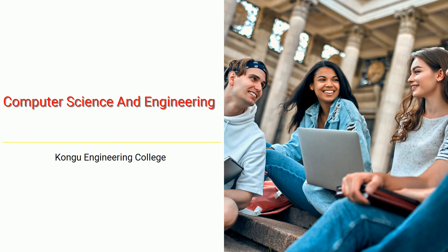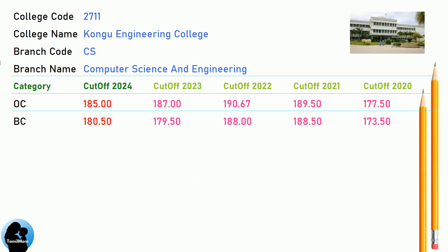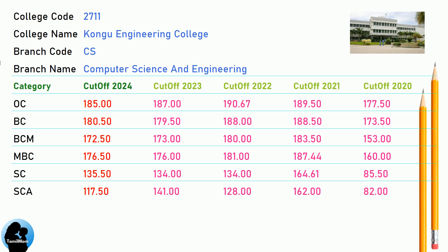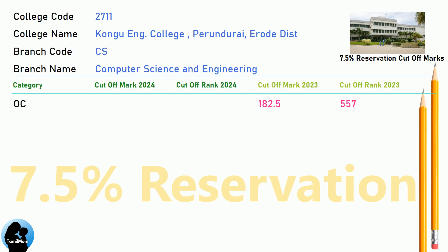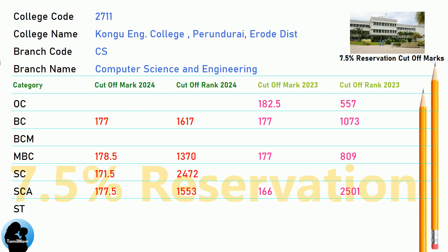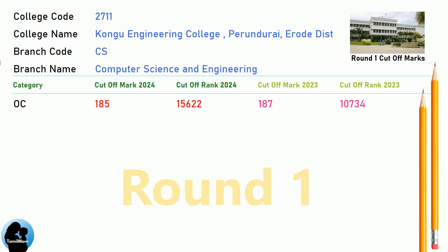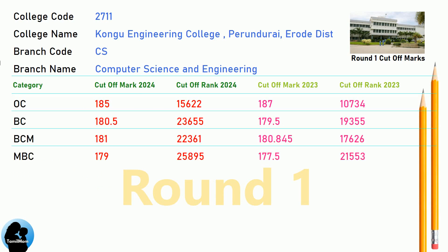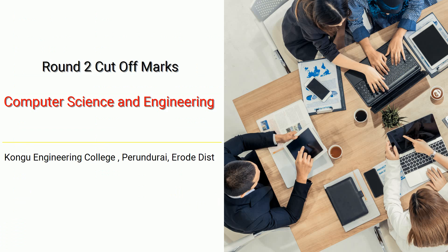DNA cutoff for Kongu Engineering College in Computer Science and Engineering. DNA 7.5 reservation cutoff for Kongu Engineering College in Computer Science and Engineering. DNA Round 2 cutoff for Kongu Engineering College in Computer Science and Engineering.